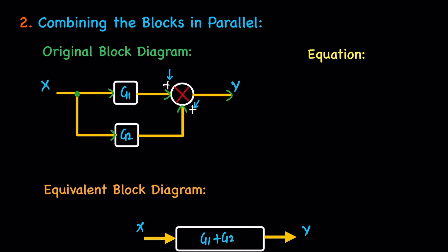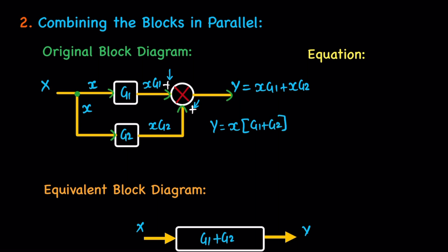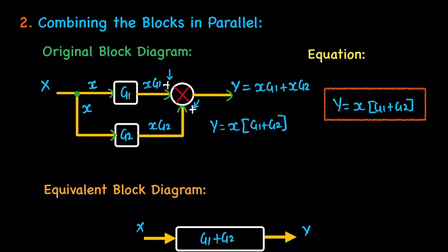For the equation: the input x passes through g1 giving x times g1, and through g2 giving x times g2. Since both signs are positive, y equals x·g1 plus x·g2. Taking x as common, the final equation is y equals x times (g1 plus g2). After simplifying the block diagram, the equation must remain the same — y equals x times (g1 plus g2).